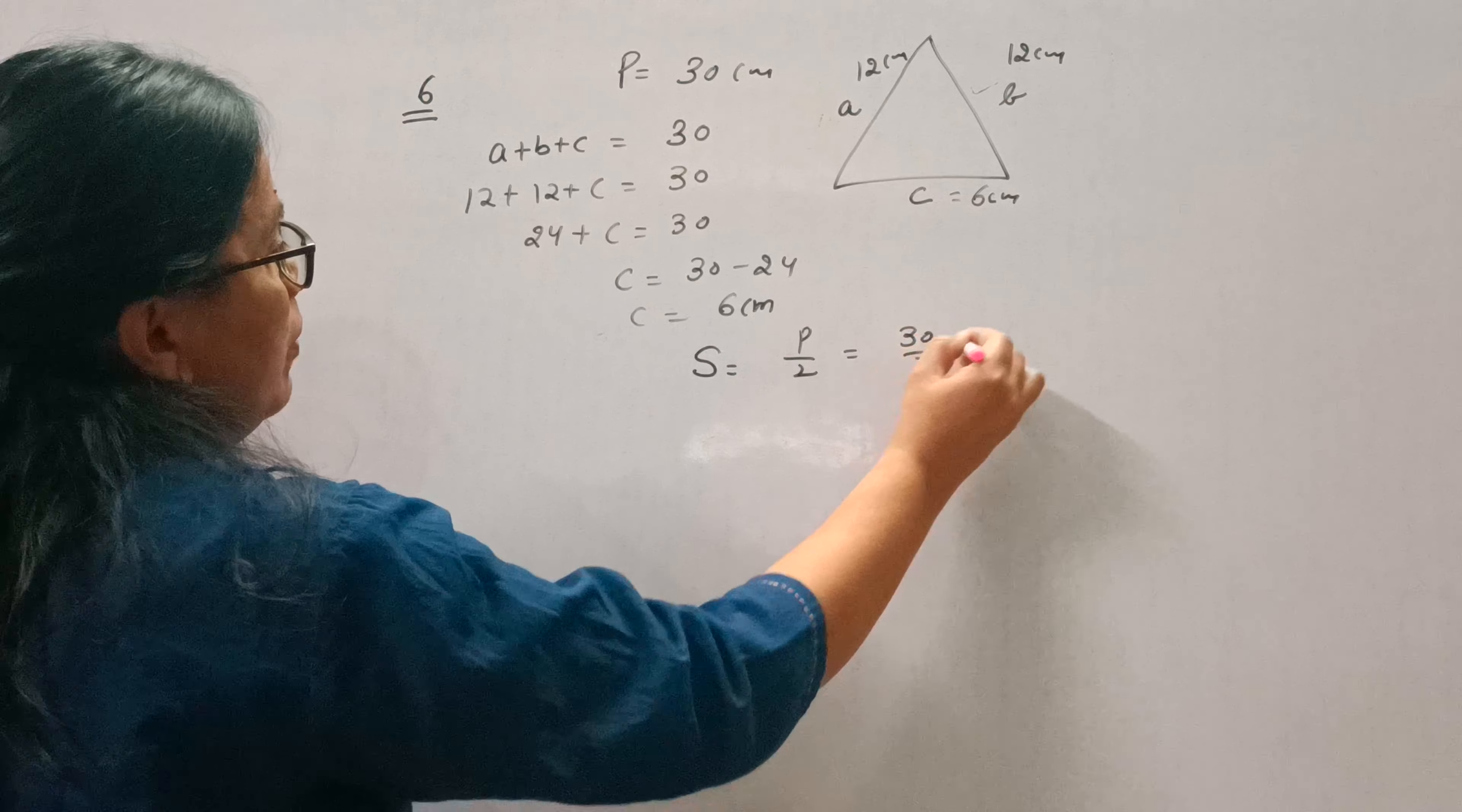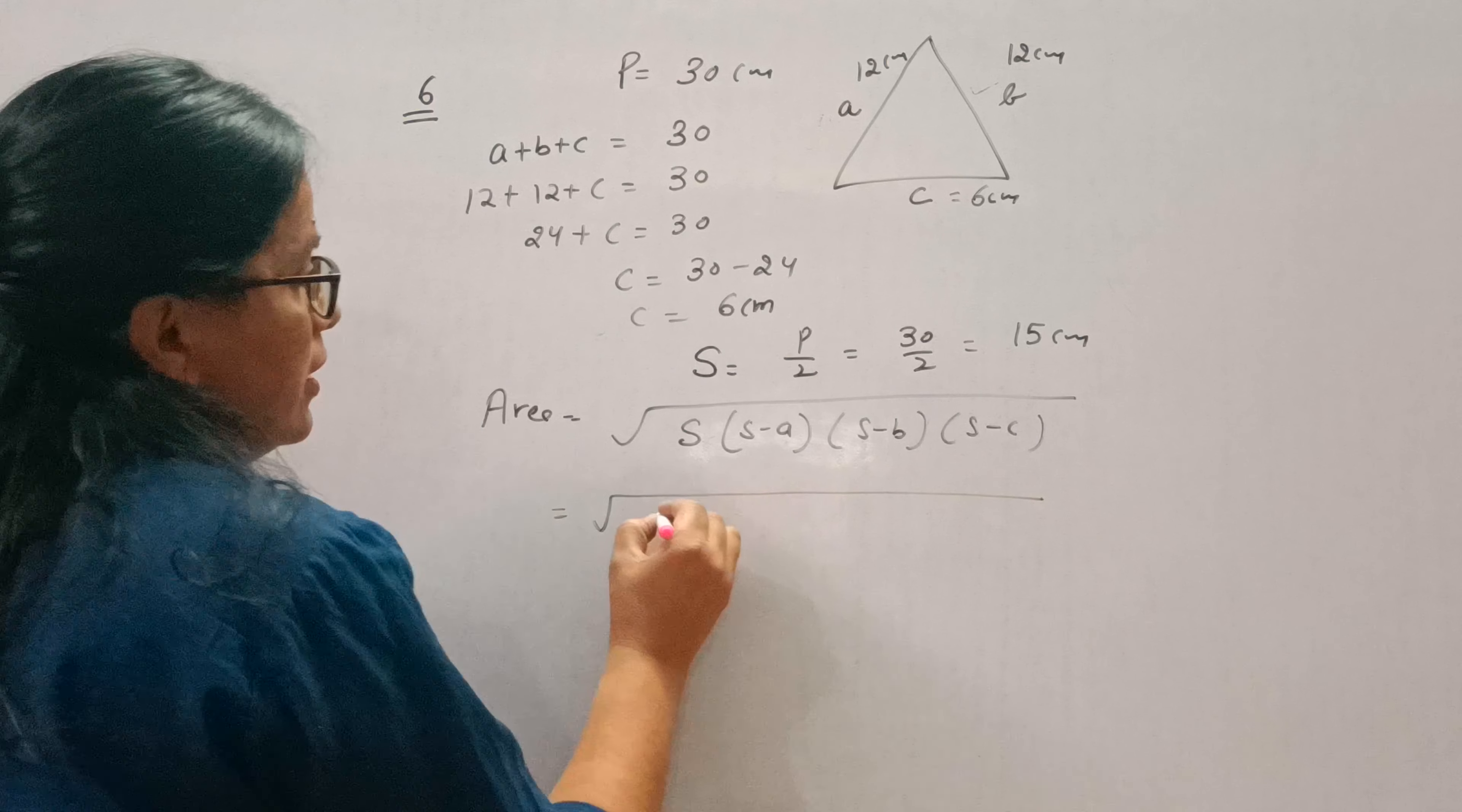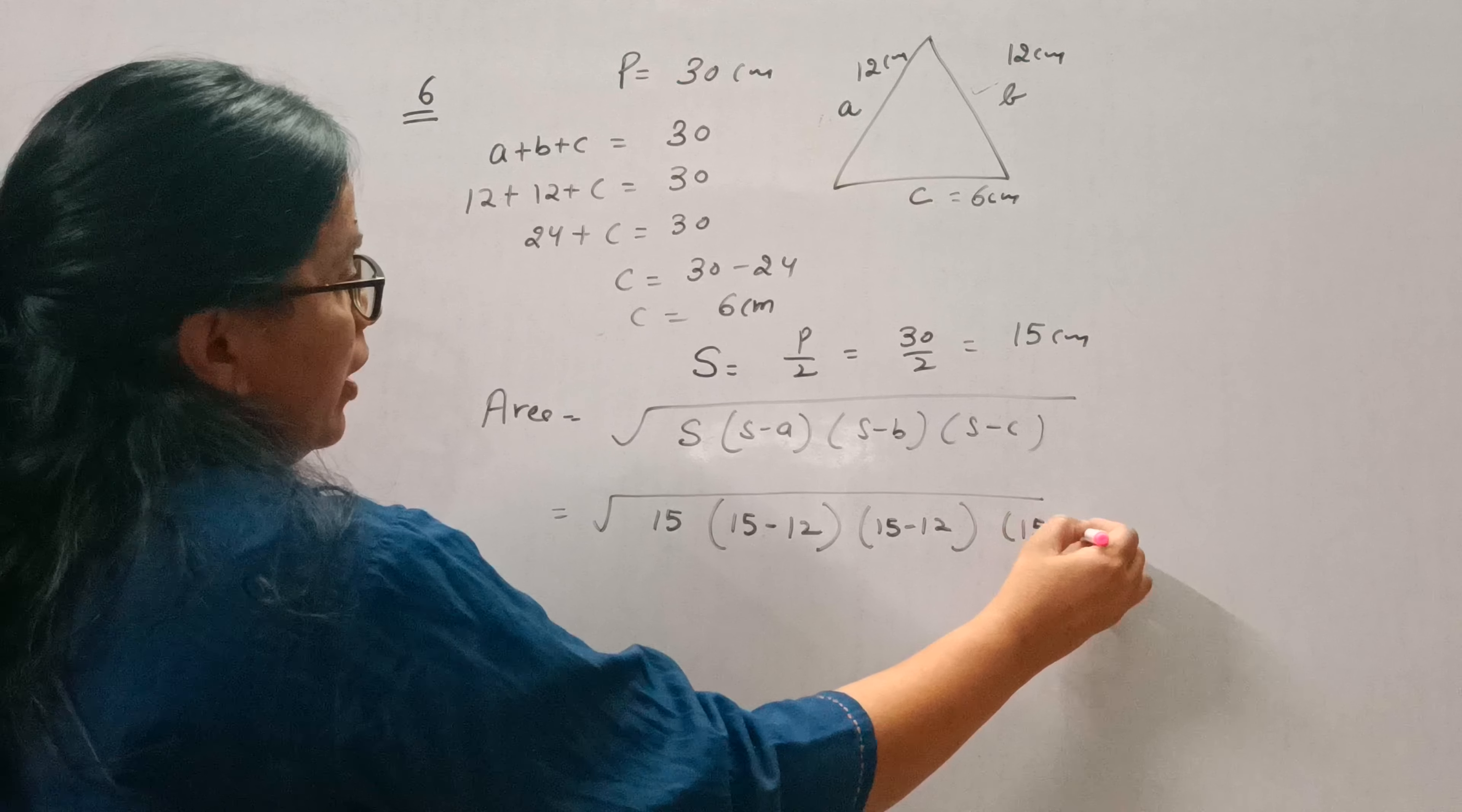Now let's find the area. Area will be square root of S times (S minus A) times (S minus B) times (S minus C). S is 15. So we have 15 minus 12, 15 minus 12, 15 minus 6.